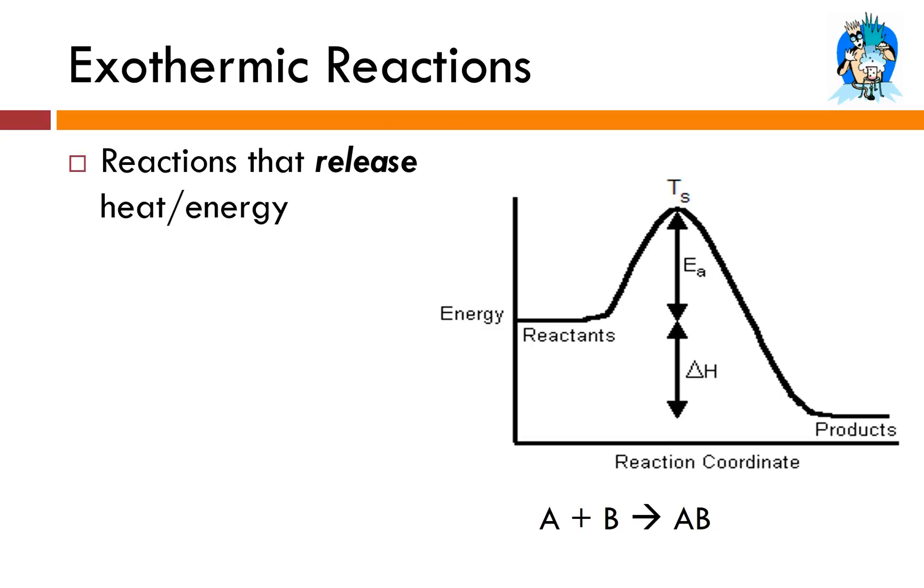So I'm looking at the one on the left, our exothermic reaction potential energy diagram. Exothermic, the prefix exo means out. Therm we know means heat. So these are reactions that push heat out or release energy. In this case, our products have less energy than the reactants. So we're going to see a negative delta H value.